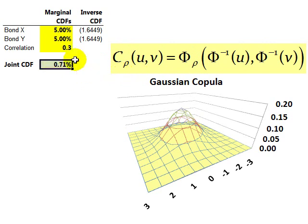And so now we can have in a single answer, the answer to the question, what is the probability that both bonds simultaneously default? And you can see here with 0.3 correlation, the Gaussian Copula is telling us there's a 0.71% chance that both bond X and Y default.